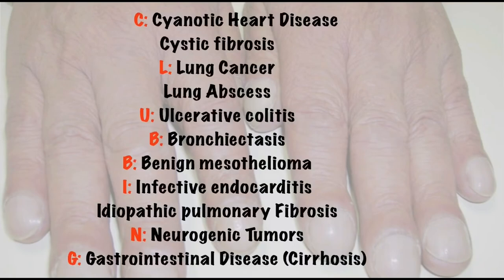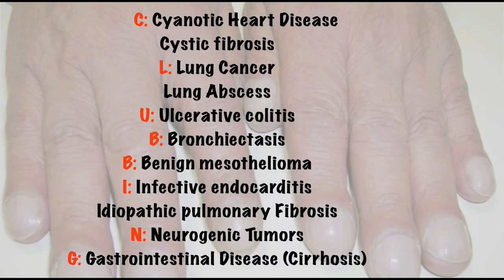Now let us see the causes of clubbing. This is a well-known mnemonic for remembering the causes of clubbing — each letter of CLUBBING stands for a particular cause. C stands for cyanotic heart disease and cystic fibrosis, L for lung cancer and lung abscess, U for ulcerative colitis, B for bronchiectasis and benign mesothelioma, I for infective endocarditis and idiopathic pulmonary fibrosis, N for neurogenic tumors, and G for GI diseases like cirrhosis.